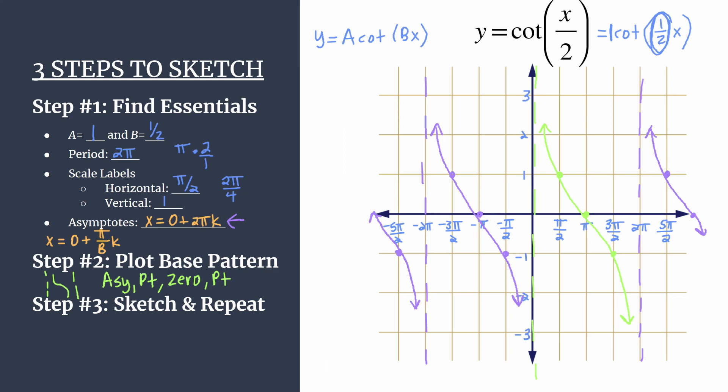If you want one more way to double check that your graph is accurate, look back to your value b. Remember that one half says we should have half a cycle happening between 0 and pi. So if you look between 0 and pi, sure enough, you just have half of that cotangent curve.